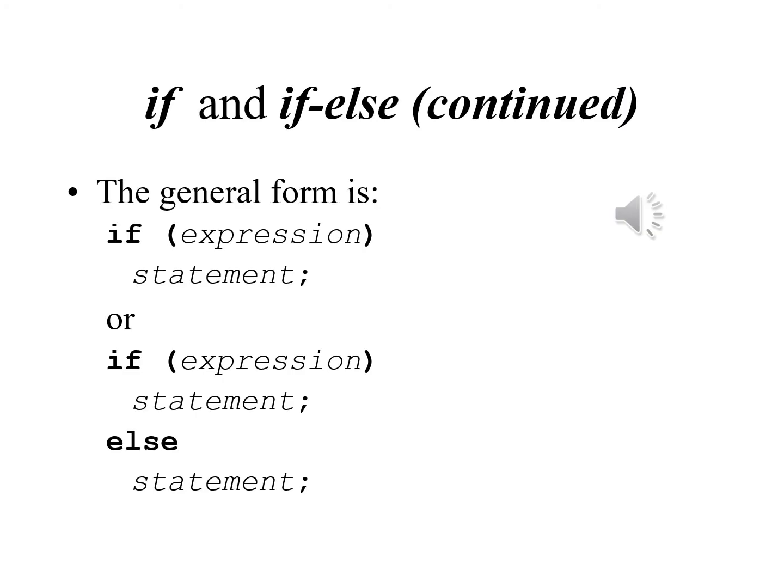The most basic form of an if-statement is the word if, followed by some expression inside parentheses that will evaluate as either true or false, and then a statement followed by a semicolon. The most basic form of an if-else is an if with some expression evaluated as true or false inside parentheses, a statement and semicolon, then the reserved word else, and another statement also followed by a semicolon.